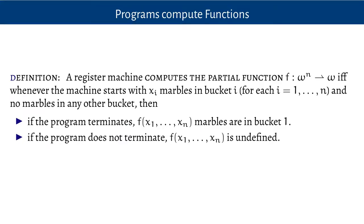So there's a sense in which this register machine computes addition. Here's the general sense of how a register machine computes a function, or a partial function. A register machine computes the partial function from N inputs to an output: whenever the machine starts with X1 marbles in register 1, X2 in register 2, X3 in register 3, and so on, with no marbles in any other registers, then if the program terminates, the result f(X1, ..., Xn) is the number of marbles in register 1. If the program doesn't terminate, then f applied to those inputs is undefined. So the register machine we had computes addition: if you put N marbles in the first register and M marbles in the second register, then N plus M is the number of marbles returned in register 1.